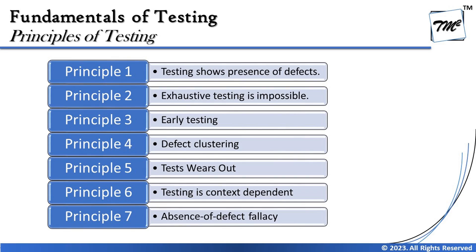We have seven standard principles of testing. The first is: testing shows presence of defects. The second is: exhaustive testing is impossible. The third is: early testing saves time and money. The fourth is: defects can cluster together. The fifth is: tests wear out, earlier known as the pesticide paradox. The sixth is: testing is context dependent. And the seventh is: absence of defects is a fallacy.